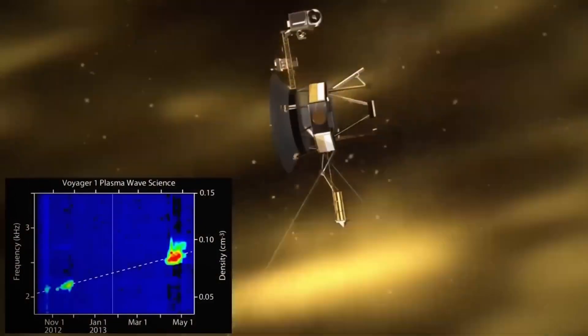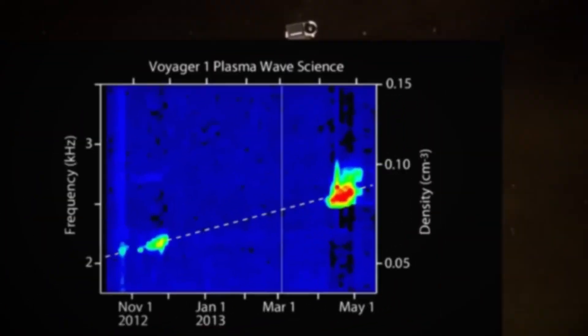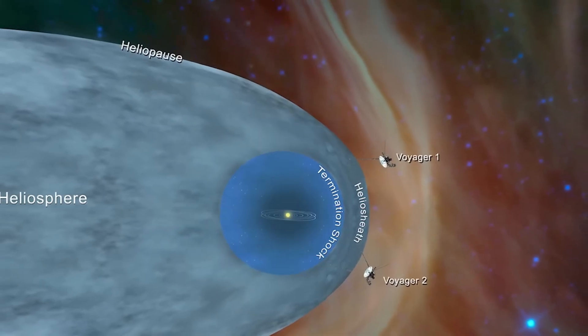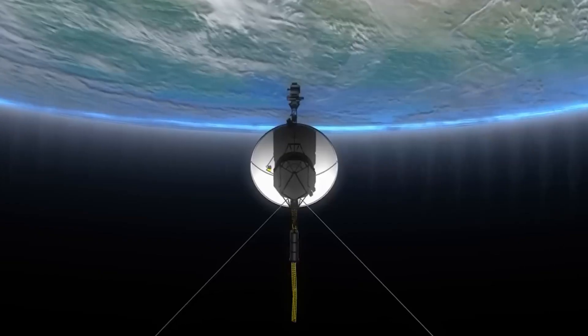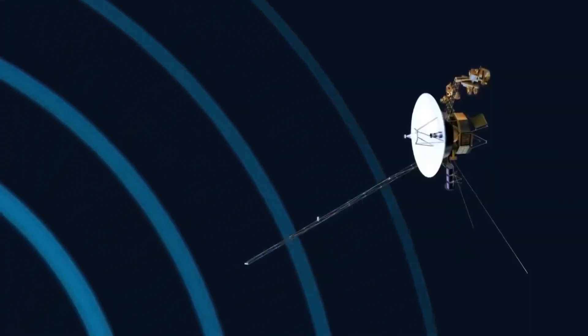Interstellar space isn't an empty corridor. It's a swirling ocean of invisible currents and echoes. And Voyager, as our tiny sailboat, navigating blind through weather we never even knew existed.